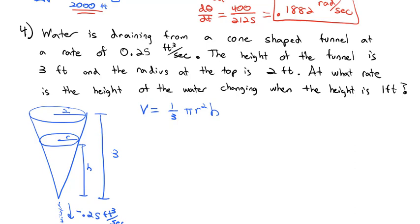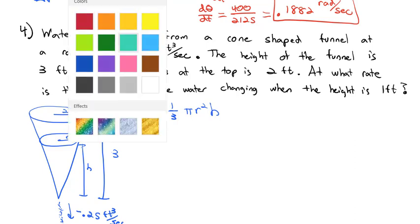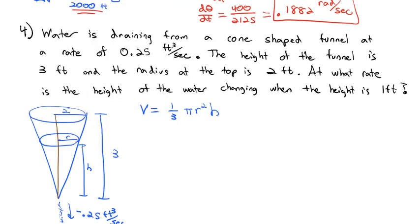The problem is we end up with three variables: the change in height, change in radius, and change in volume. We want to reduce to two. Drawing a line down the middle, we get a big triangle with height 3 and length 2, and a small triangle with height h and radius r. These are similar triangles, so their sides are proportional: r over h equals 2 over 3, and solving for r gives r equals 2h over 3.